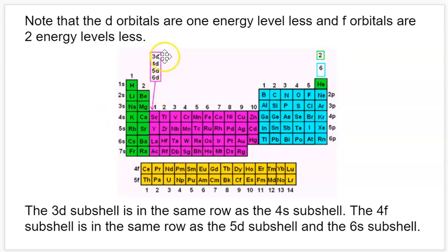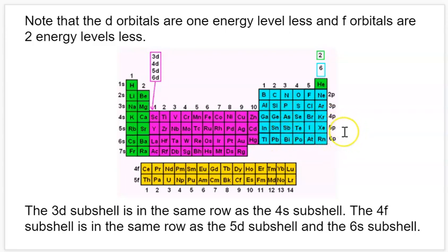The d block ones are one energy level less, and the f ones are two energy levels less. So say we wanted to figure out the electron configuration for xenon. We know it's in the fifth row, so that corresponds to the 5p subshell. It's the sixth element within the p block, so the p subshell is going to have six electrons. So we know xenon's configuration ends in 5p6, and all subshells before that are completely full. We just read the periodic table from left to right, knowing how many electrons are in each subshell.